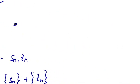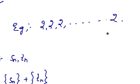For example, the sequence 2, 2, 2, 2, 2, so on up to 2, is a constant sequence.